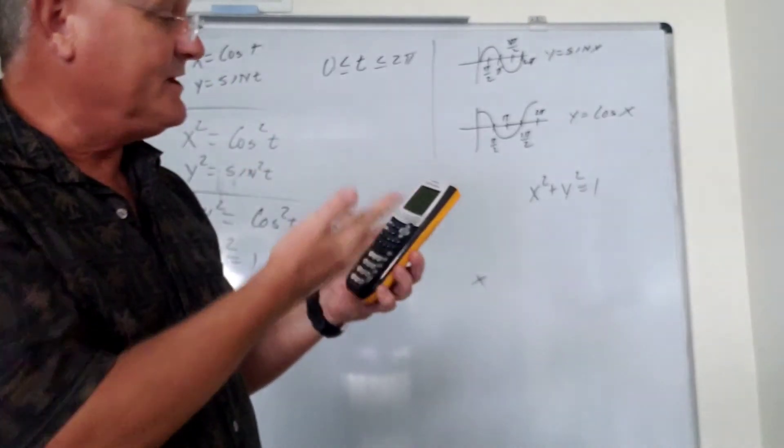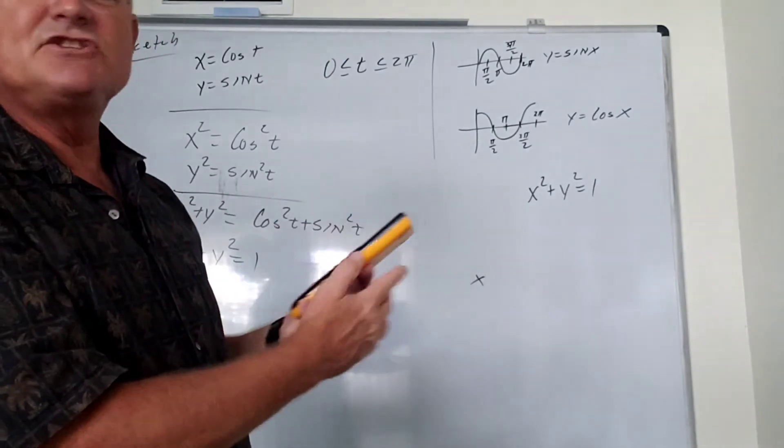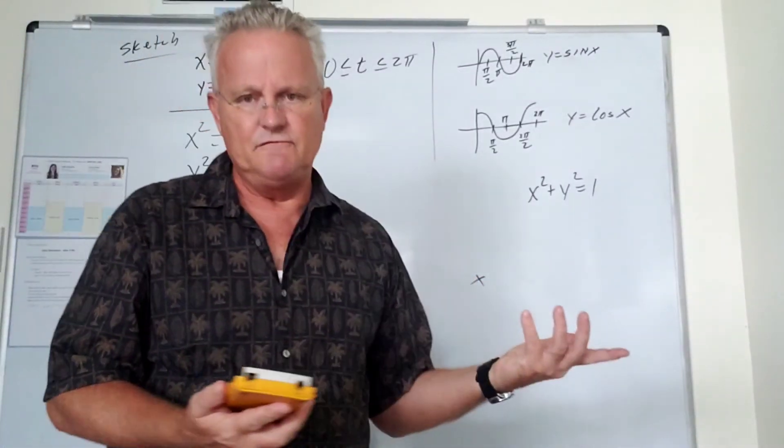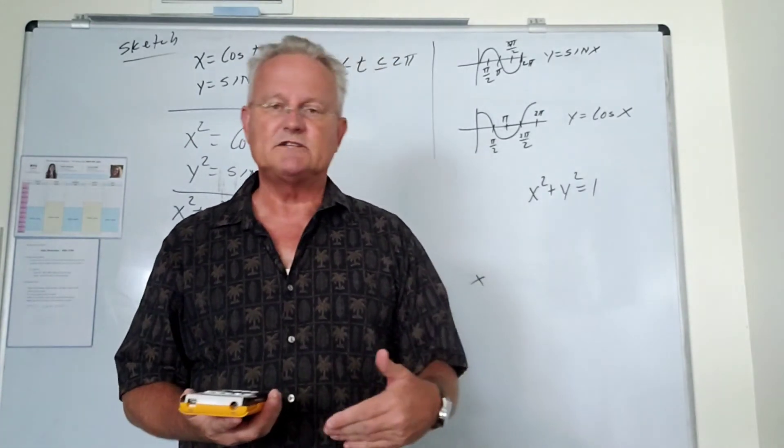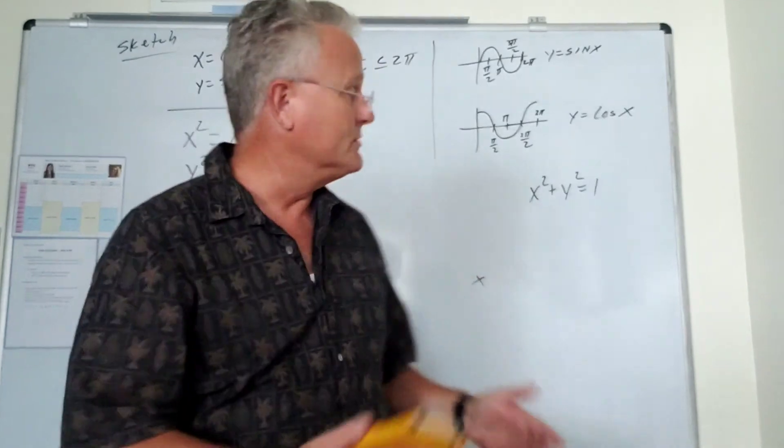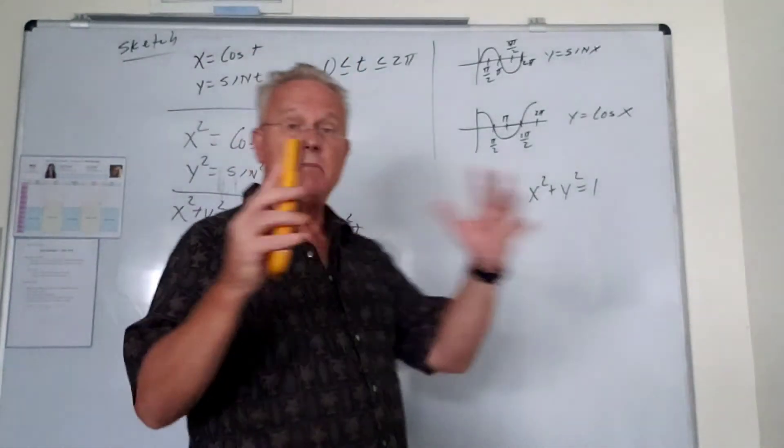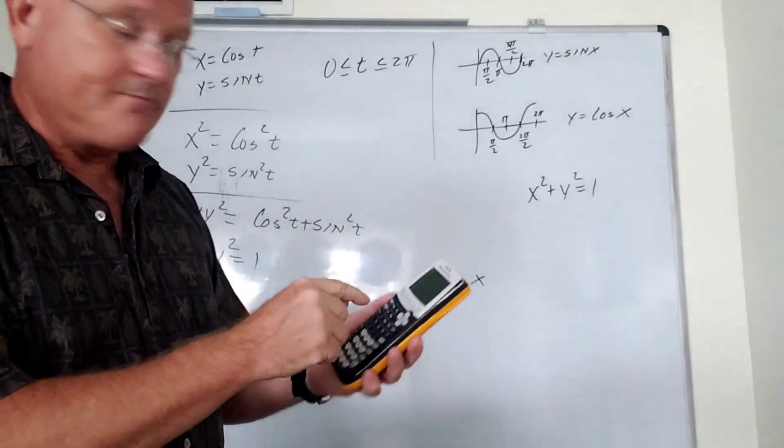And then let's do x minimum to be negative 2, x max to be positive 2. Same for y, negative 2 and positive 2. That will give us a big enough window to see the circle. So now notice, after we type that in, when we press graph,